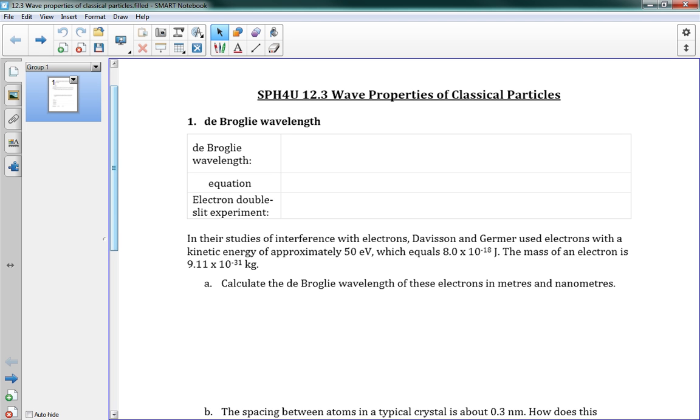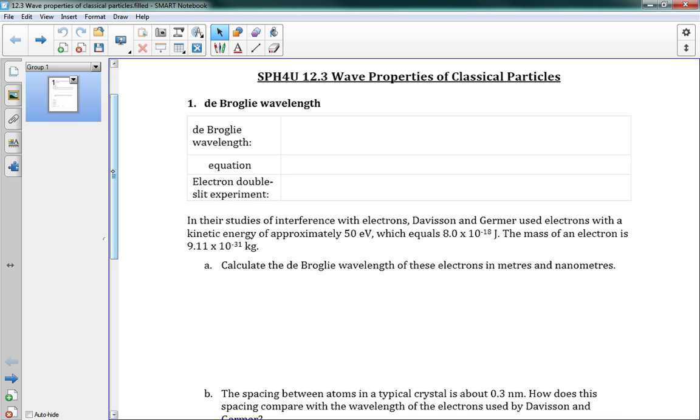Anything at all can be seen as a particle or as a wave. And this idea was first put forward by a guy named de Broglie, and he found the idea of the de Broglie wavelength.